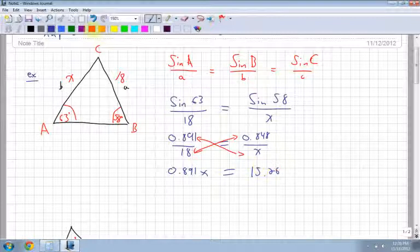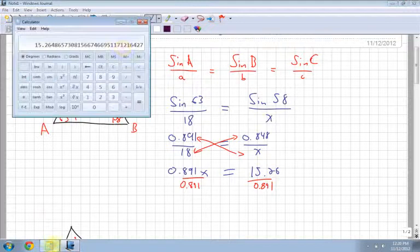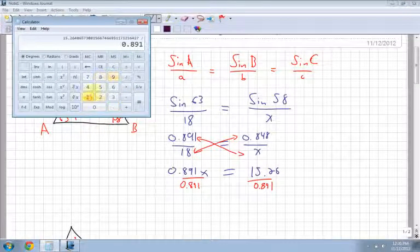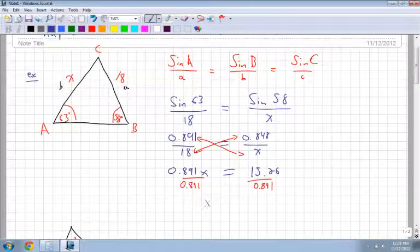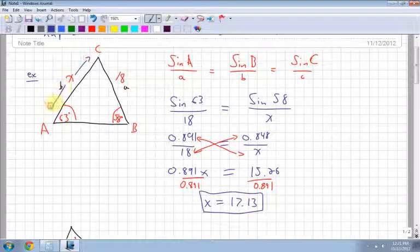This is how I solve these things. I use cross multiplication. So I multiply the top by that bottom and this bottom by that top. So I end up getting 0.891 times x is 0.891x, which is equal to 0.848 times 18, which is 15.26. And then for the last step, we have to divide by the 0.891. So I take my value there divided by my 0.891 and I end up with 17.13. So x is equal to 17.13, and that is the length of this side over here.